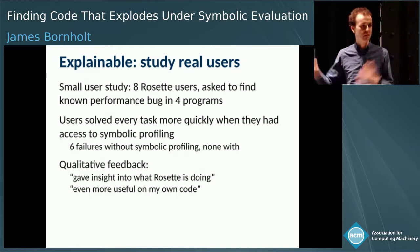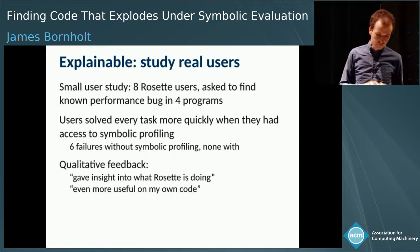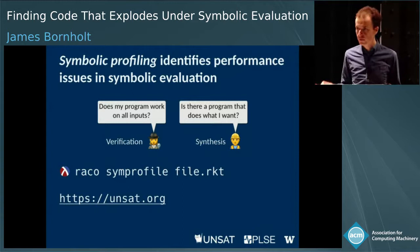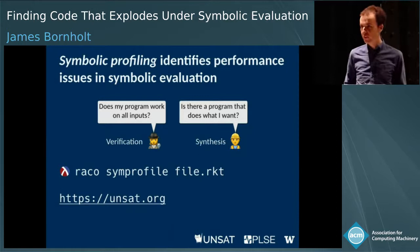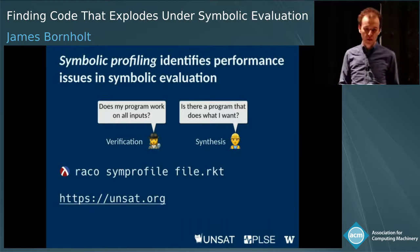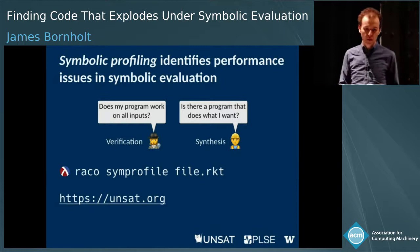We have more results in the paper — things like the overhead of symbolic profiling and the sensitivity of the ranking function. Symbolic profiling is a way of identifying bottlenecks in automated reasoning tools like verifiers and synthesizers. If you're a Rosette user, symbolic profiling is already integrated — it's just a command line away. It's also integrated into Crucible if you're a Galois client. Otherwise, check out our website at unsat.org. We have more results, the paper, and the artifact there. I'm happy to take questions.